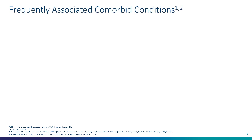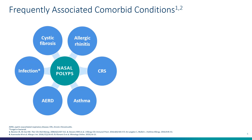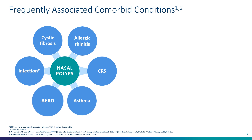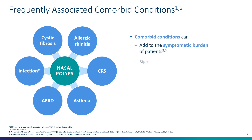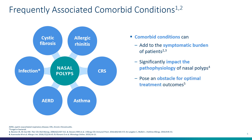The frequently associated comorbidities with nasal polyps are myriad. In this cartoon, you can see nasal polyps is in the center of the universe, but it's surrounded by multiple other diseases: cystic fibrosis, allergic rhinitis, chronic rhinosinusitis, asthma, aspirin exacerbated respiratory disease, and infection. All of these comorbidities impact the burden of disease, and nasal polyps is usually seen within the context of other diseases, making their management quite difficult.